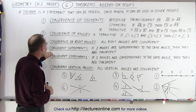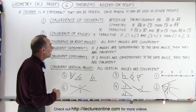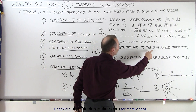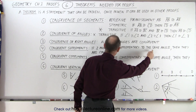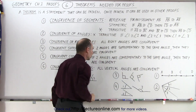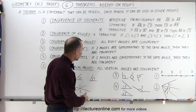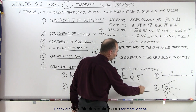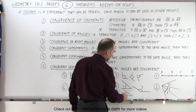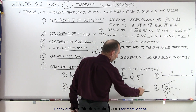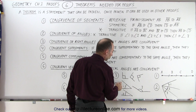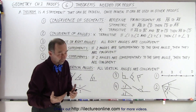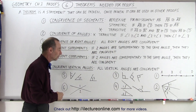Theorem 4: congruent supplements. If two angles are supplementary to the same angle, then they are congruent. Here's an example: if angle 1 is supplementary to angle 3, and angle 2 is supplementary to angle 3, then angle 1 and angle 2 must be congruent — in other words, they must have the same angle measure.